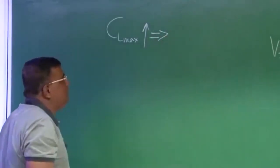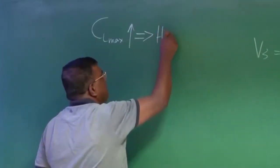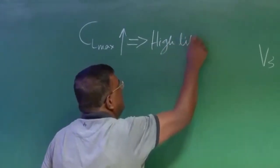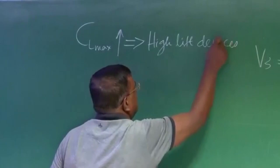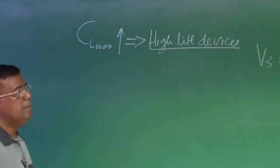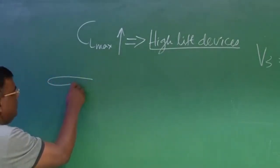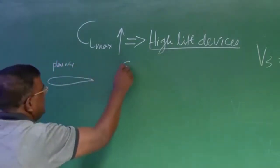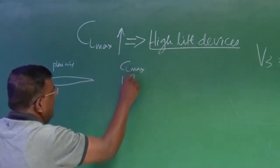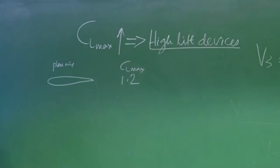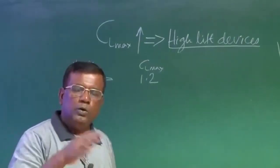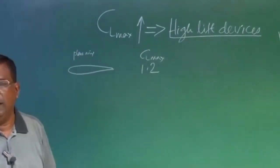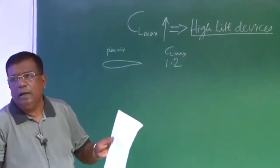And you are aware, we can increase CL max by using high lift devices. Loosely we say we introduce flaps. For example, if I take a plane wing, its CL max, I can say not a bad selection if it is 1.2. Most layer foil will have CL max 1.2. By contouring the aerofoil you can change it from 1.2 to 1.5, around that.